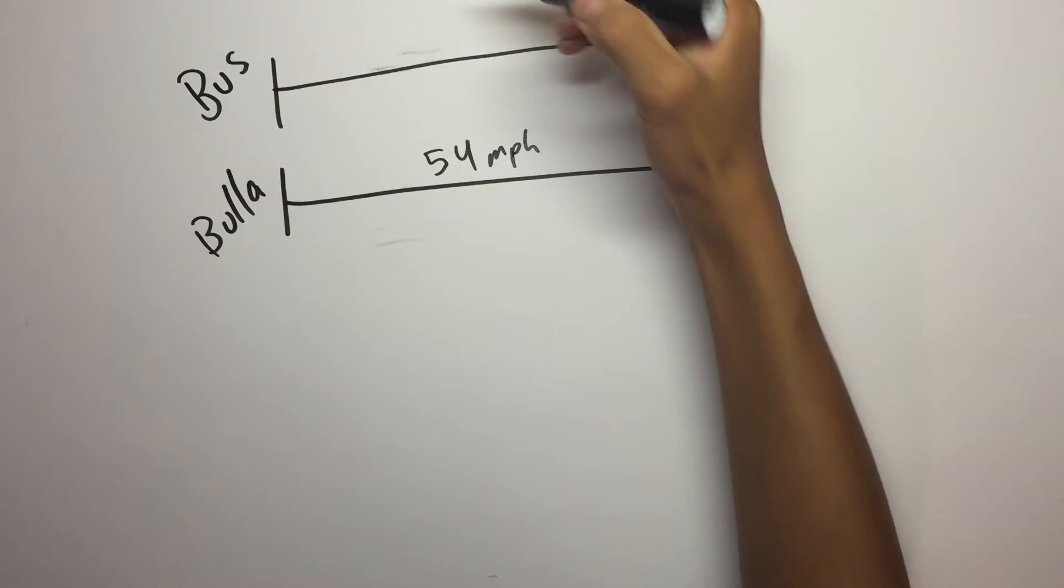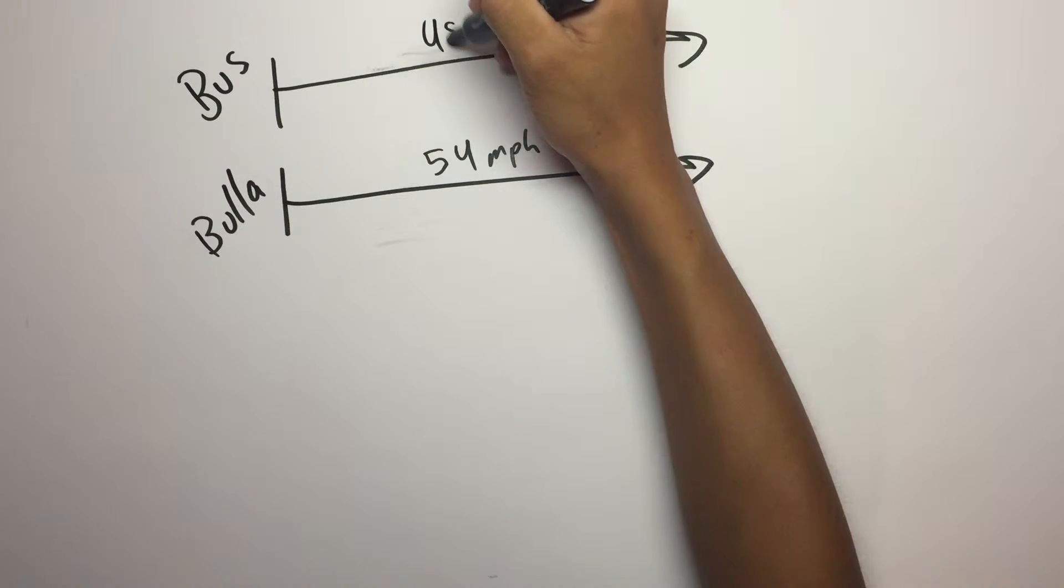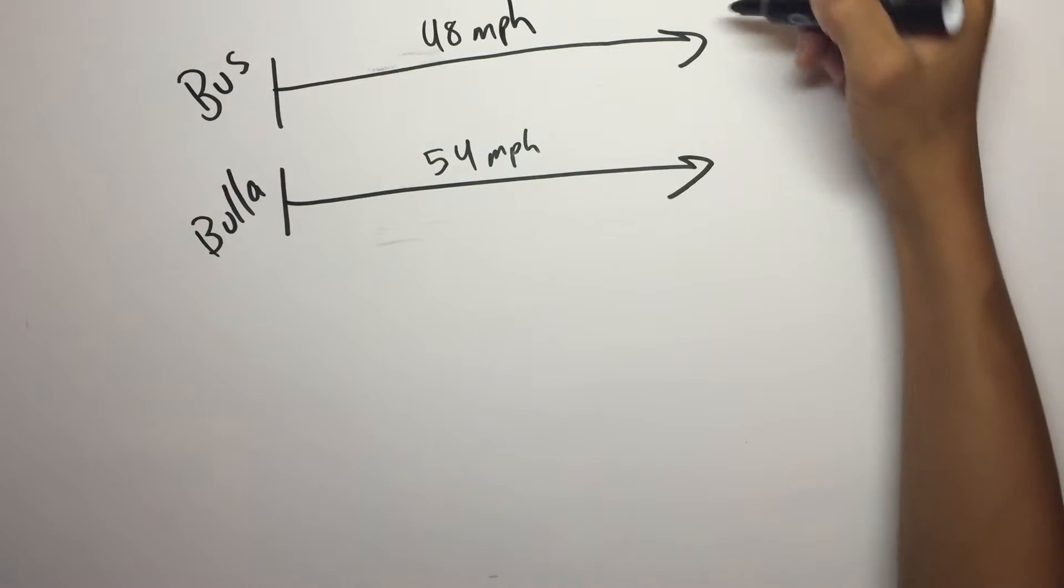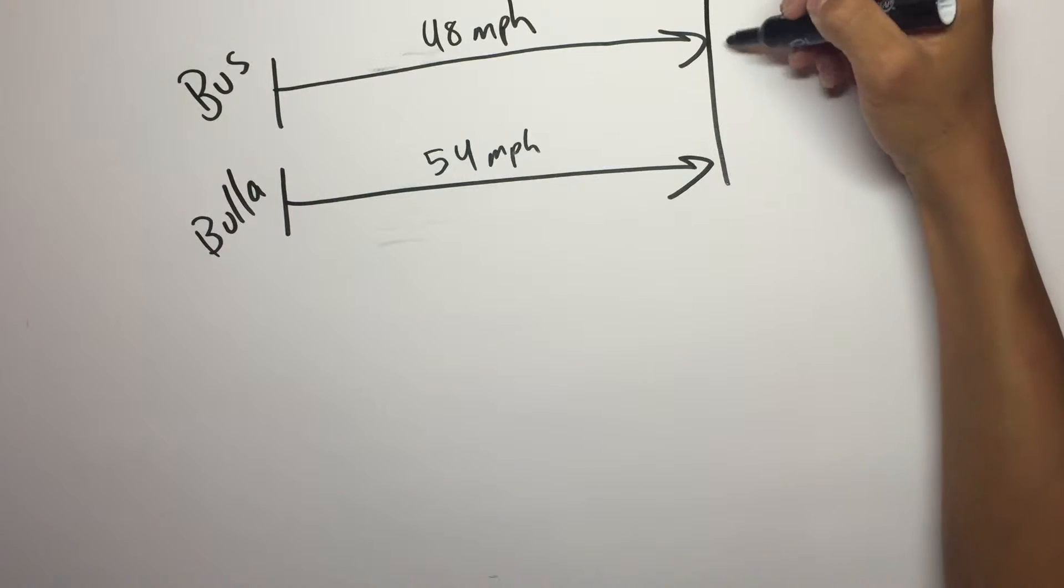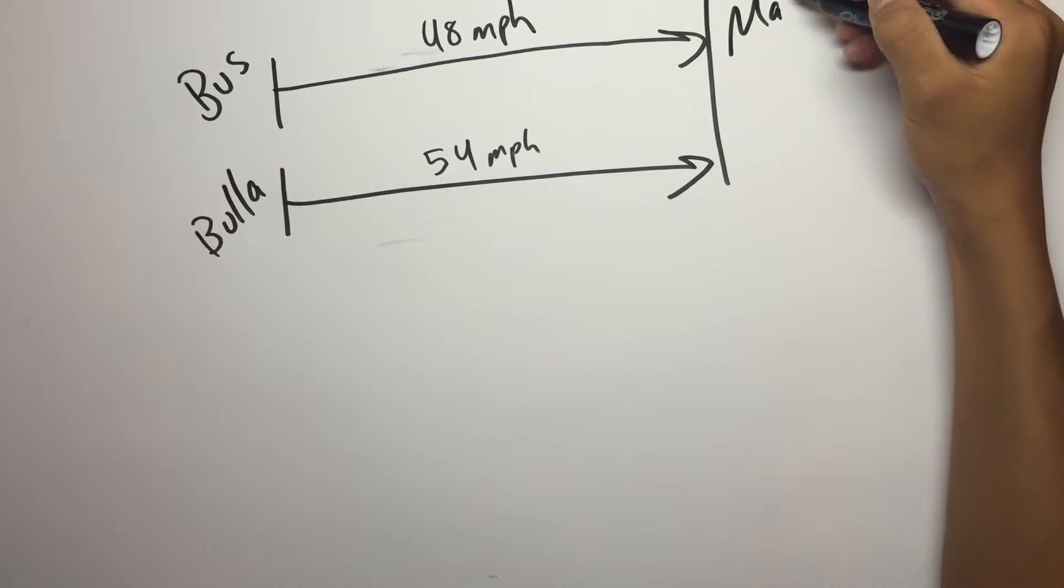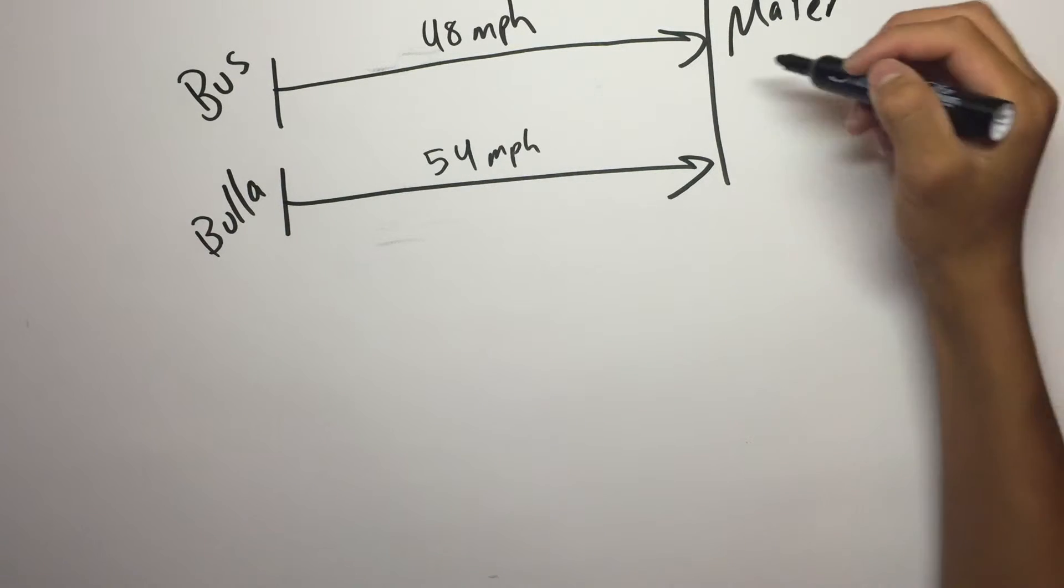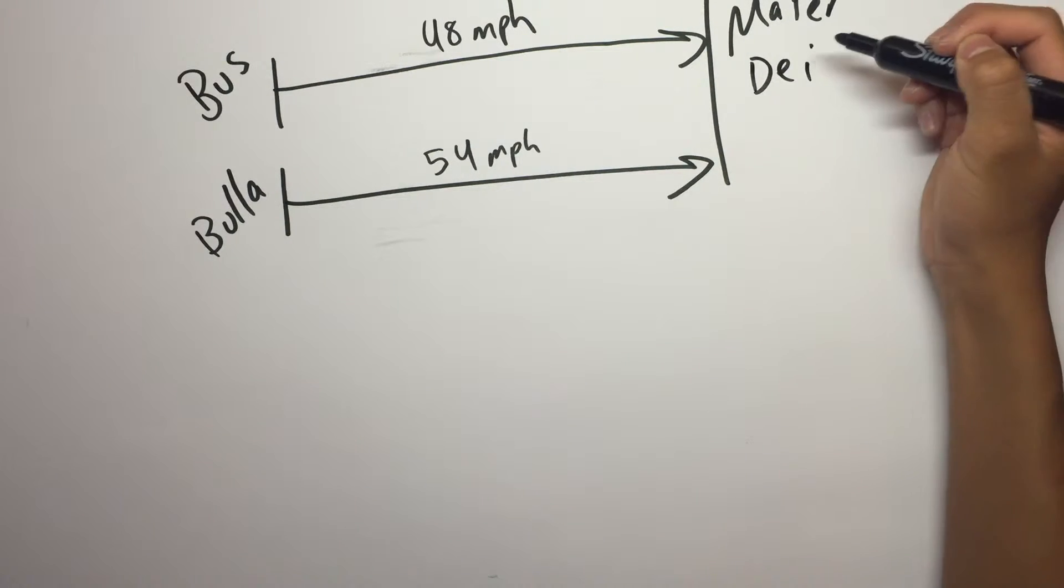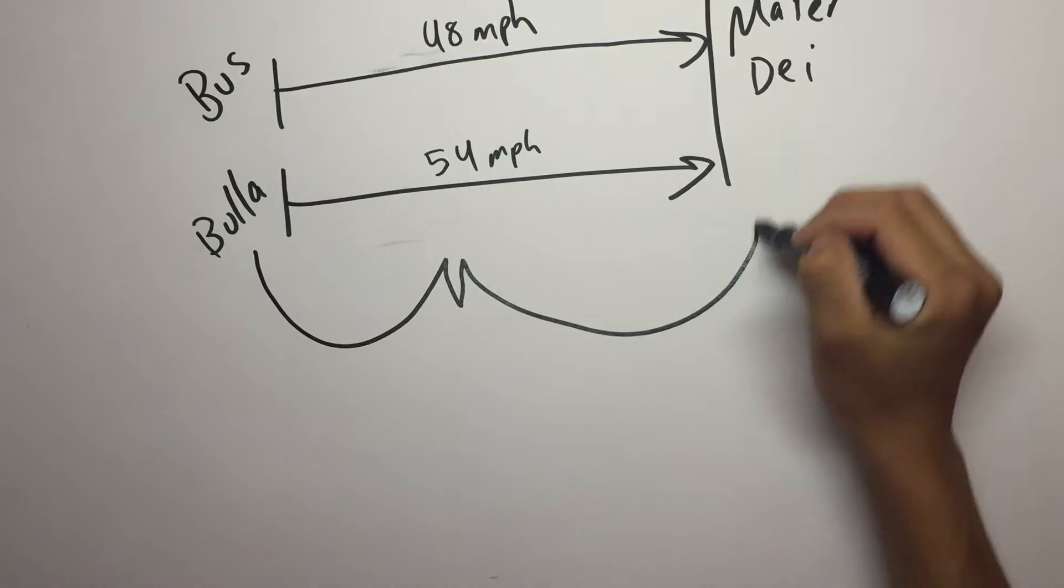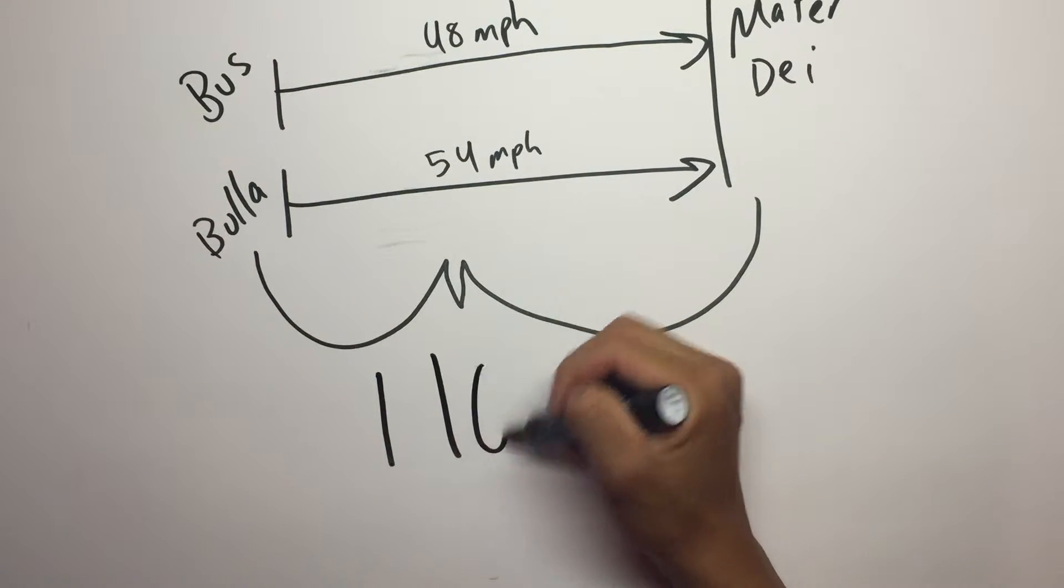Bula is going 54 miles per hour and the bus is going at a speed of 48 miles per hour. The total distance is 110 miles.